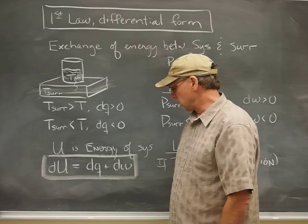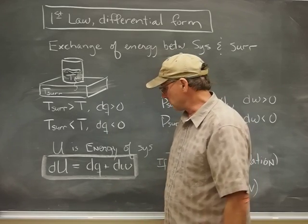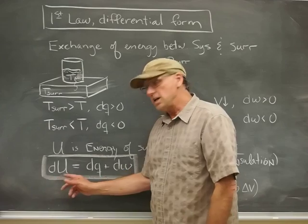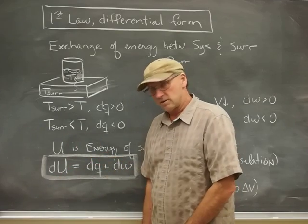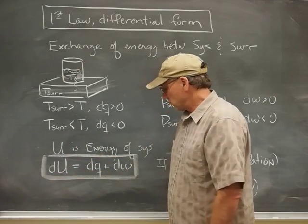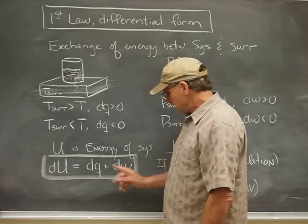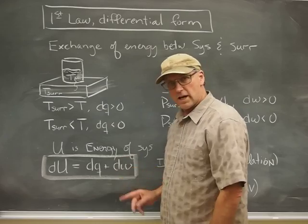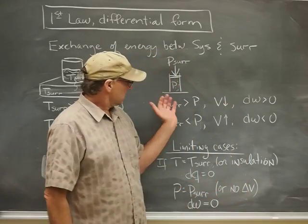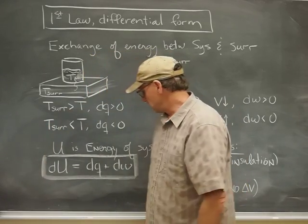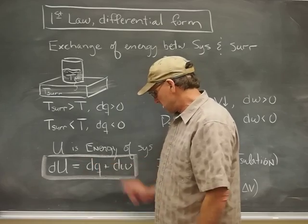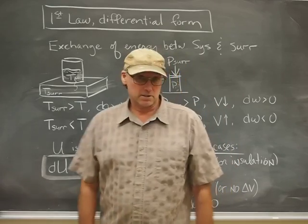And now here's the first law of thermodynamics. It's pretty straightforward. It says that the change in the total energy of that system, DU, would have to be equal to whatever change that happened as a result of a temperature difference, plus whatever result that happens as a result of work, which in this case I've indicated is a change in volume. So that's the first law.